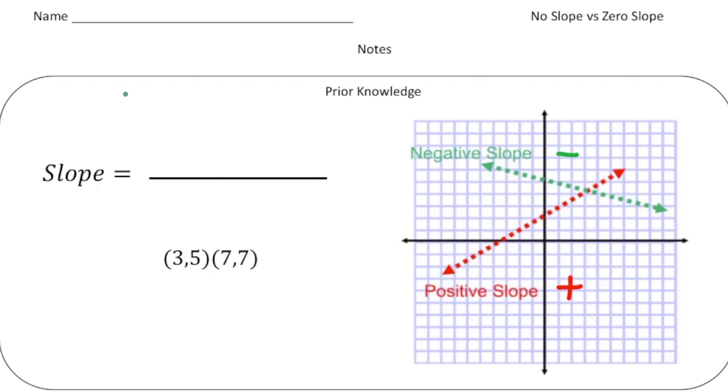And again just a reminder what slope is. Slope is the change in the y values over the change in the x values. So again slope is the change in the y values over the change in the x values. And if you have two points like this,